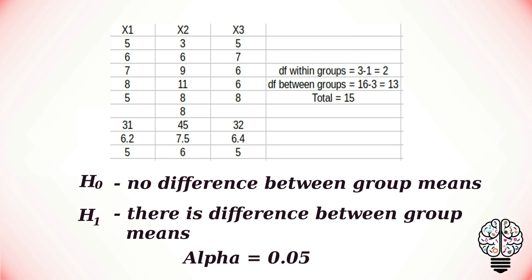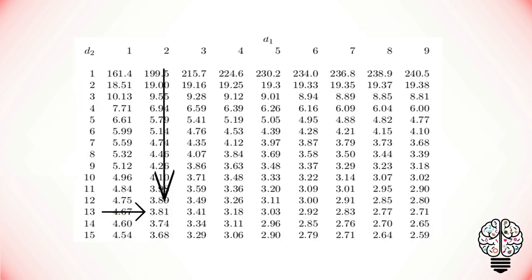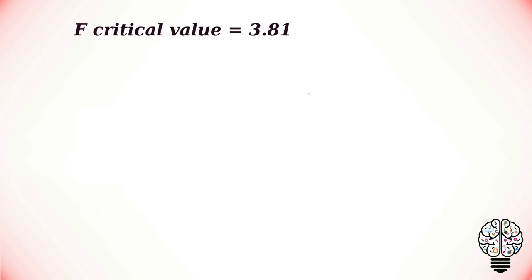With our degrees of freedom, now we can go to our F table and find the values corresponding to 2 and 13. That is, we get 3.81. With our F critical value as 3.81, now we can move on to